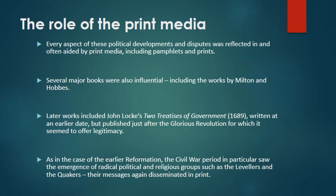Later works, including John Locke's Two Treatises of Government, published in 1689 — written at an earlier date, but published just after the Glorious Revolution, for which it seemed to offer legitimacy — and later taken up as a justificatory text by the American patriots in what became the War of Independence against Britain. As in the case of the earlier Reformation, the civil war period in particular saw the emergence of radical political and religious groups, such as the Levellers and the Quakers, their messages again disseminated in print.